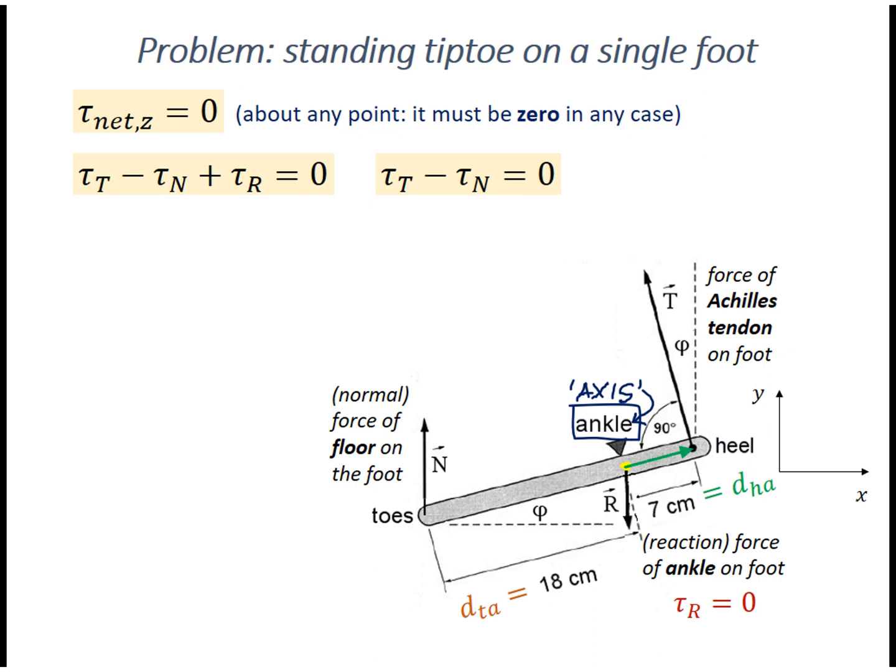This green vector is the radius for the force of the Achilles tendon. Using the definition of torque, the torque of the Achilles tendon force is T times d sub ha, and it points out of the page.